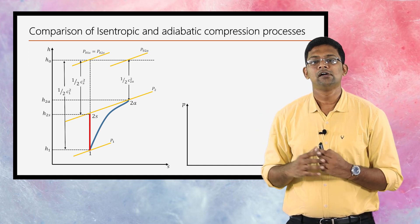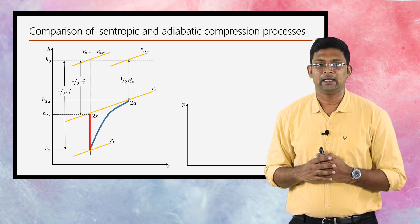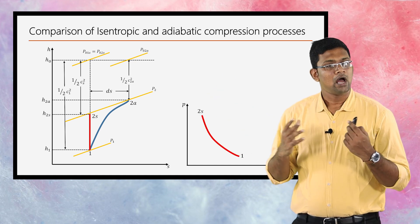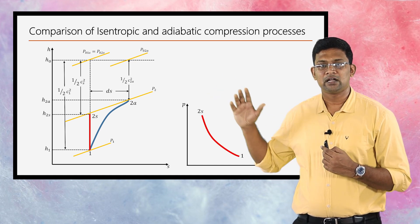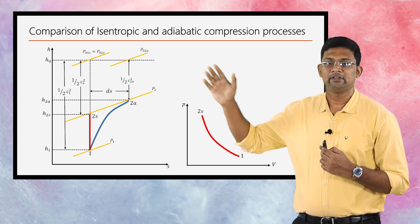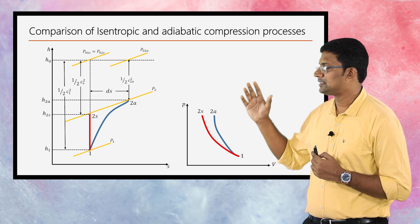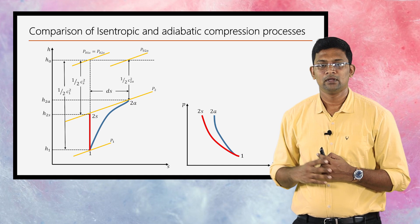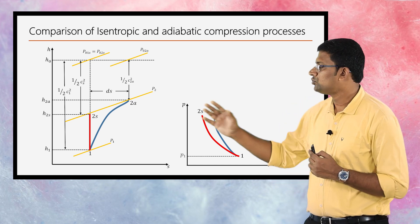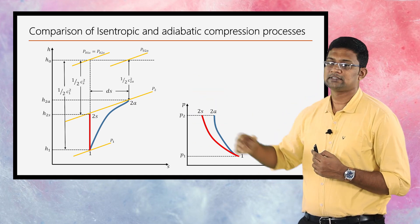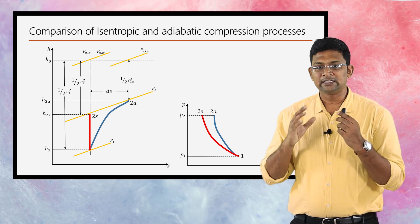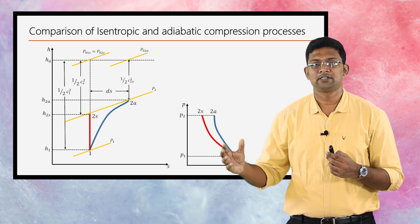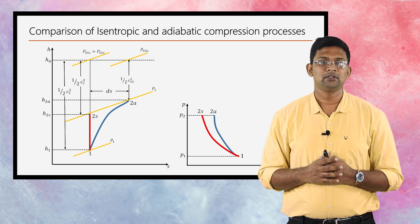Next, we are going to plot the p-v diagram. The red one represents the isentropic process starting with 1 and ending with 2s, and the blue one represents the adiabatic process again starting with 1 and ending with 2a. We then mark the two pressure points correspondingly. This is how you compare an isentropic and adiabatic process for both expansion and compression.